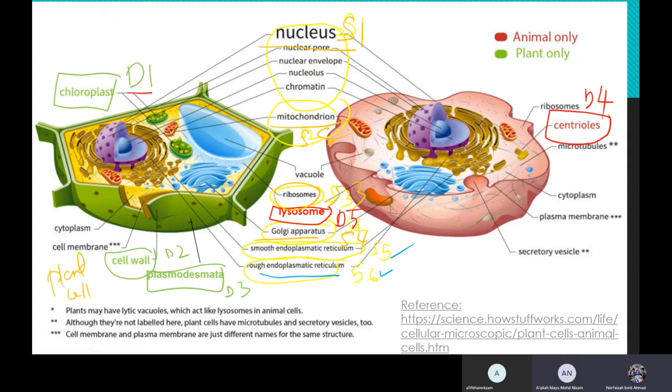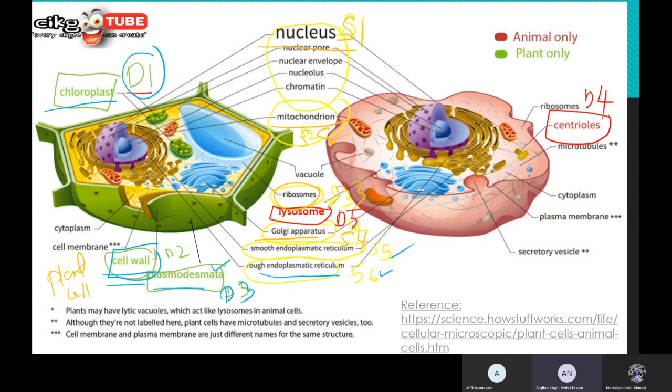Now we are looking at the differences. The question asks you about the differences. Let's start with plant cell. The first difference is chloroplast. The second difference is the cell wall. And the third difference is plasmodesmata. Repeat after me, Afiani: plasmodesmata.